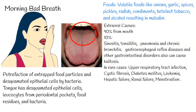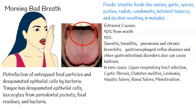In the nasal mucosa, K. ozaenae is associated. In the pharynx and sinuses, Streptococcus species are implicated. In the respiratory system, conditions such as bronchitis, bronchiectasis, and lung diseases involve P. aeruginosa.